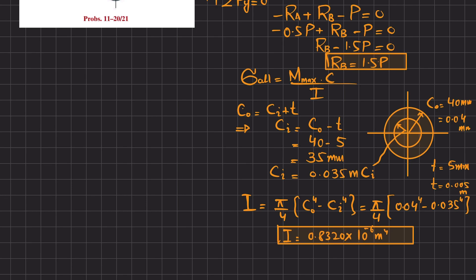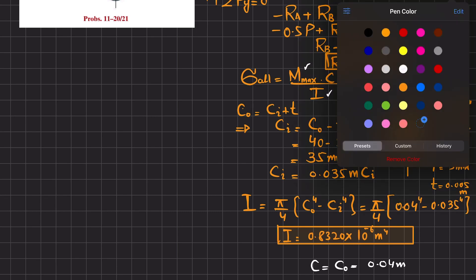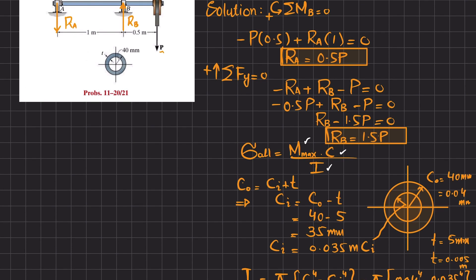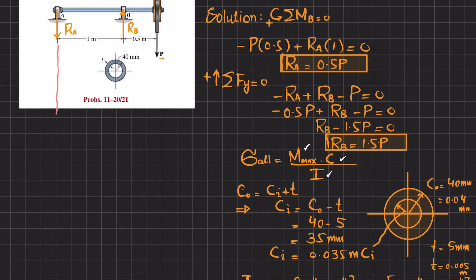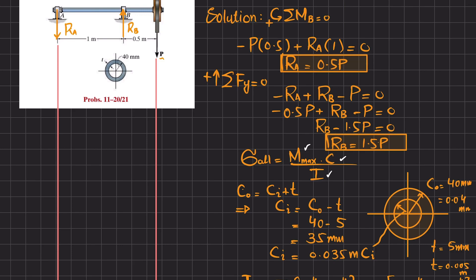Now we find the maximum bending moment. The distance c used in the bending stress formula is the outer radius: c = C_outer = 0.04 m. To find M_max, we draw the shear force and bending moment diagrams by taking vertical cut lines from the ends of the beam.